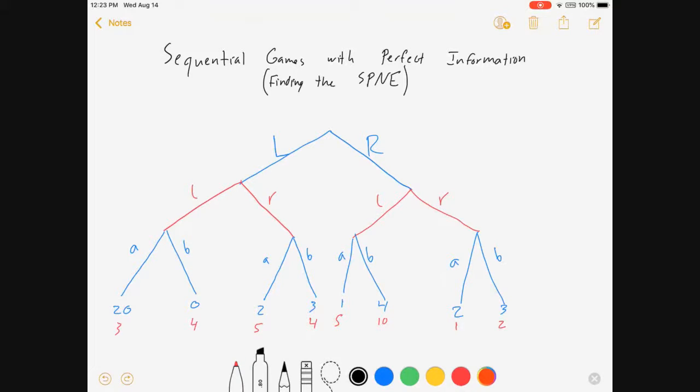So we're going to use backwards induction. And what we're going to do is we're basically going to look at each sub-game. We're going to find the Nash equilibrium of each sub-game. And then there will be one that fits all of them, basically. So if I look at this, if I look at blue player, I need to analyze each of these last four sub-games.